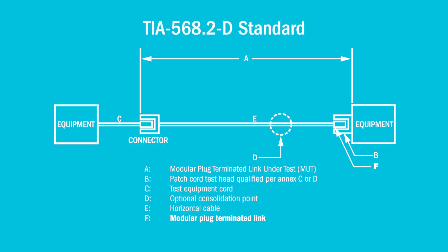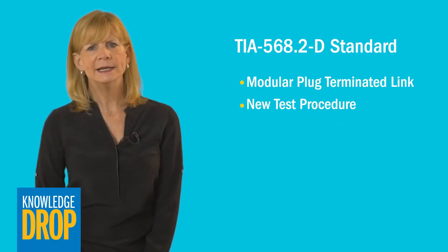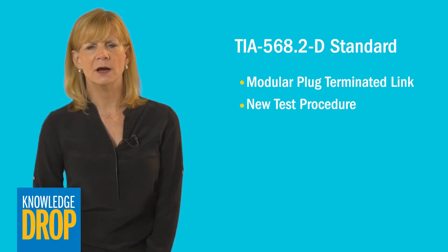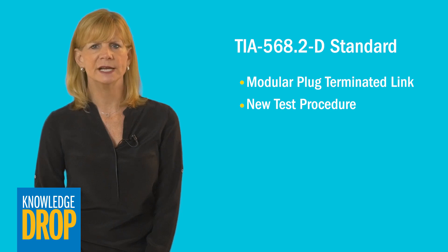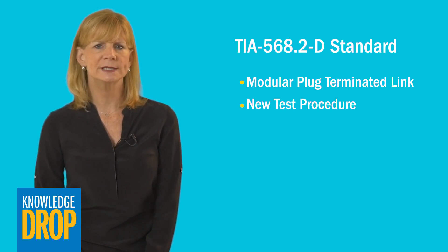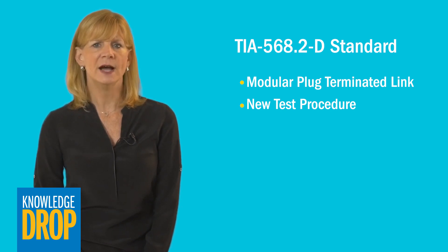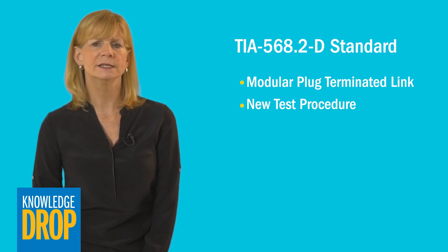That changed when the TIA approved a cabling topology known as the modular plug terminated link, or MPTL, which has the horizontal cable terminated using a modular plug rather than an equipment outlet. An annex defining the MPTL cabling topology and field test procedure has been incorporated into the recently published TIA 568.2D standard.